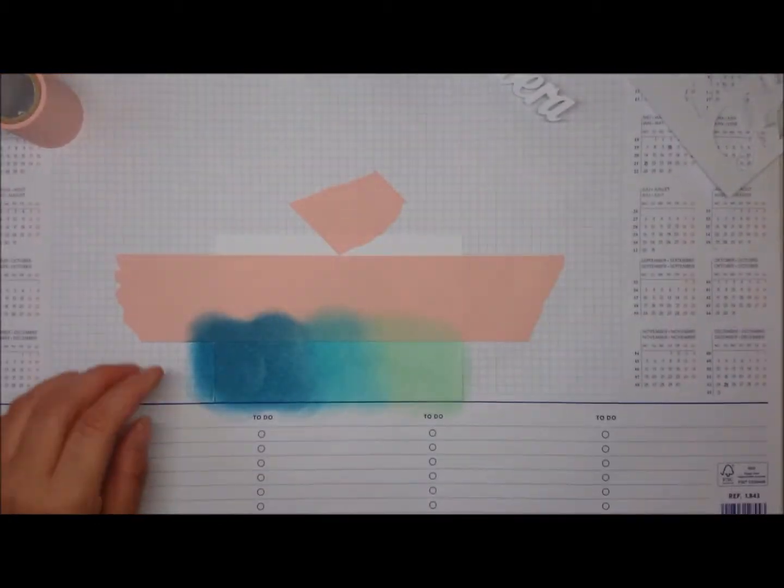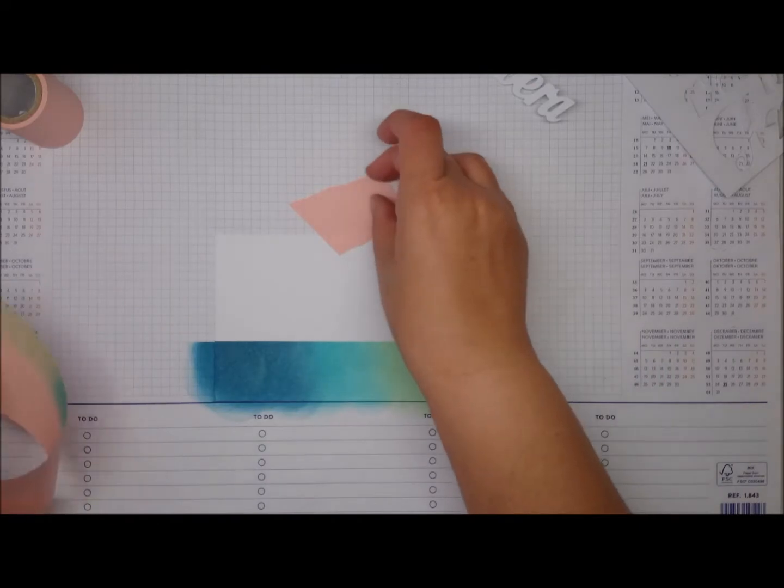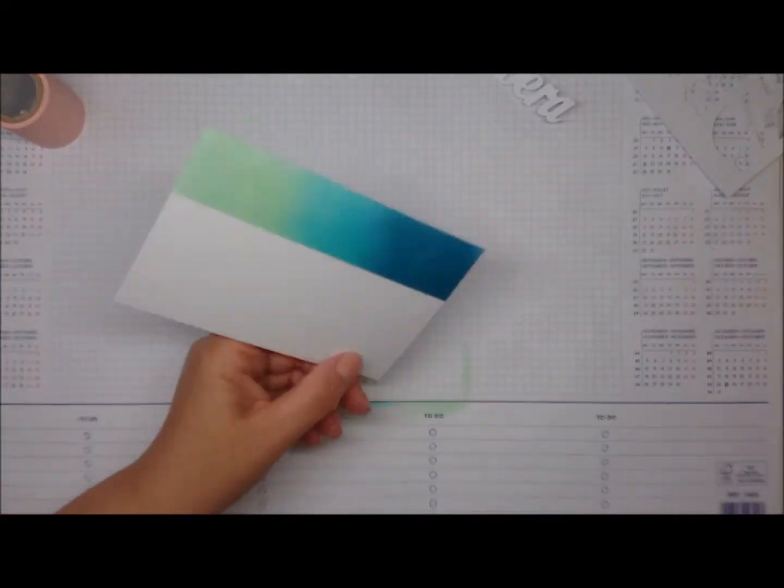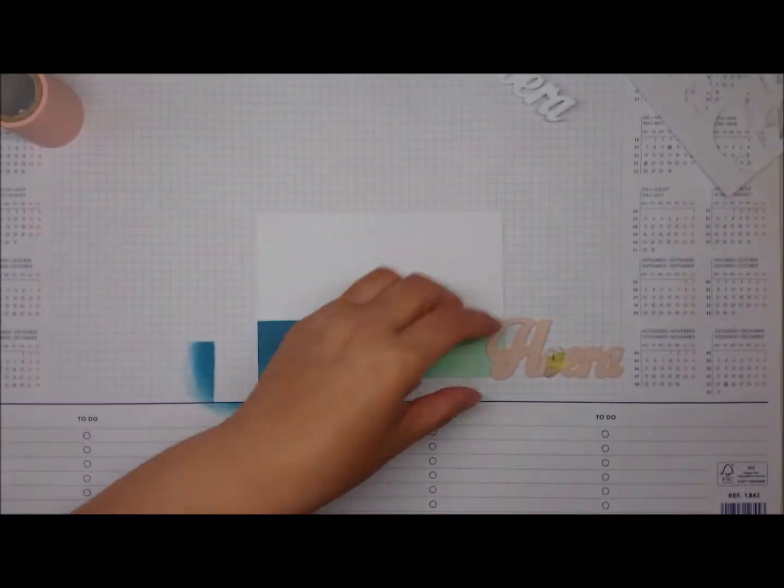I like how easy they are to blend. Of course distress oxides are also easy to blend with. This is just normal card but if you have trouble, try Bristol smooth or watercolor paper.